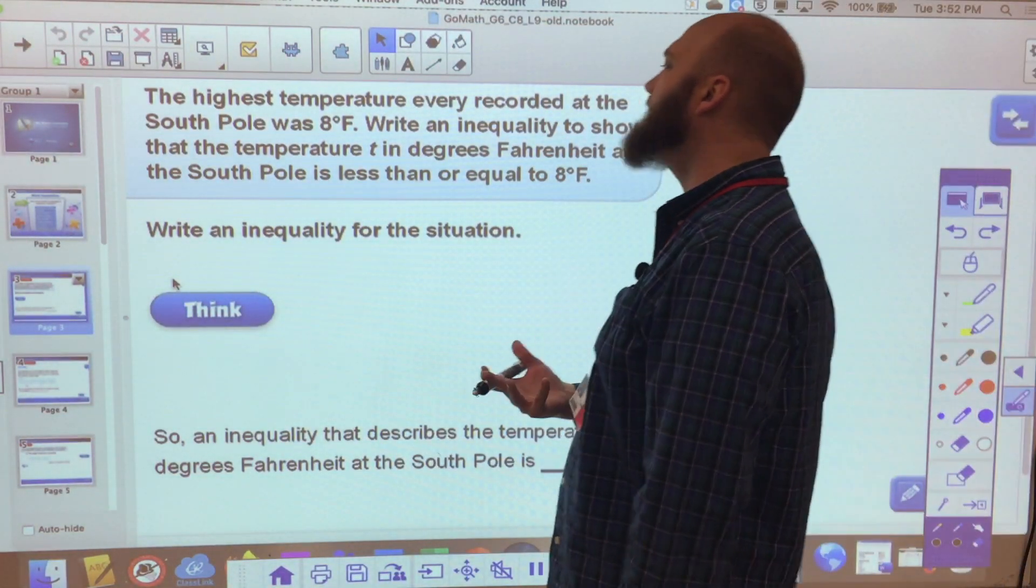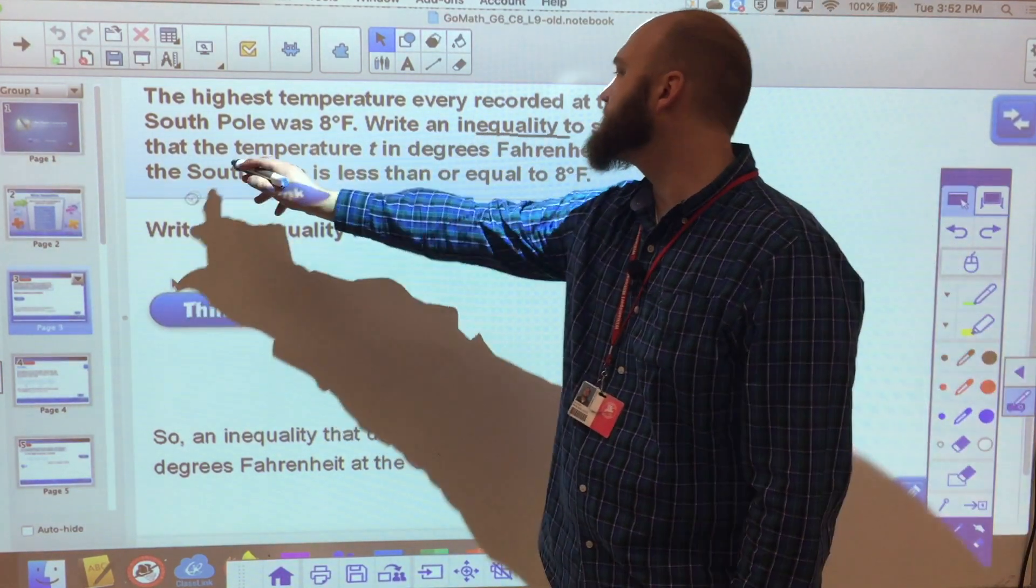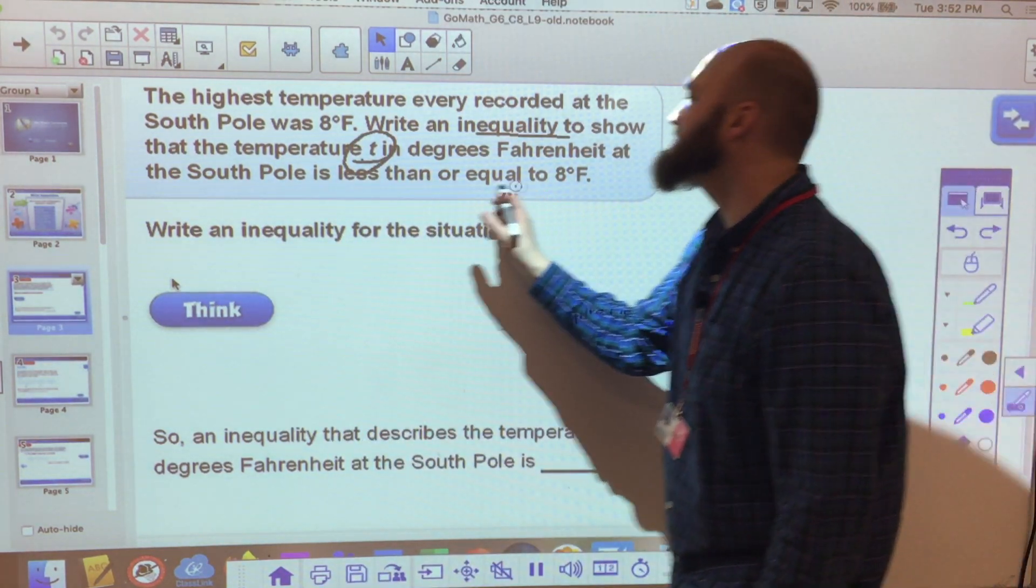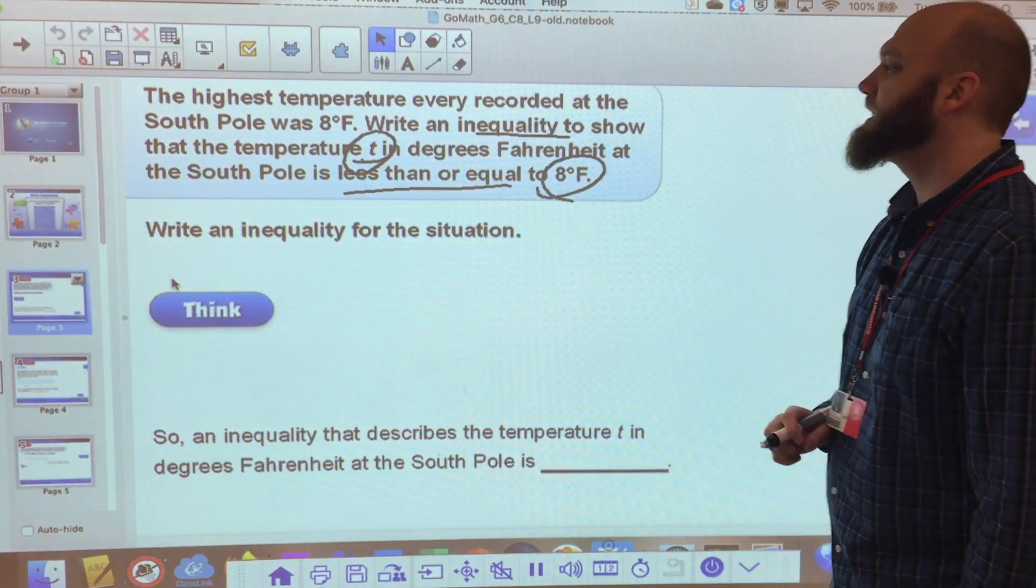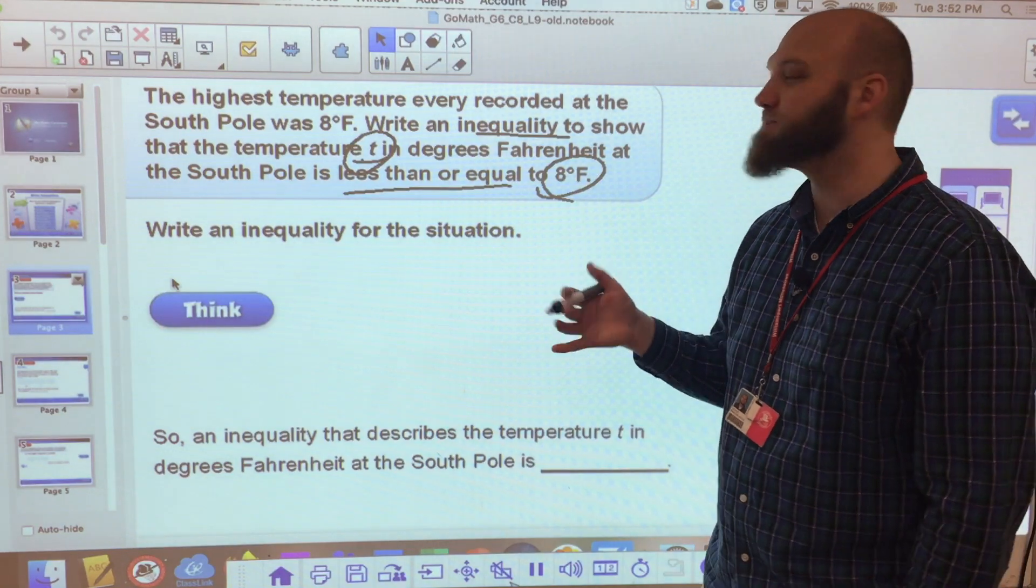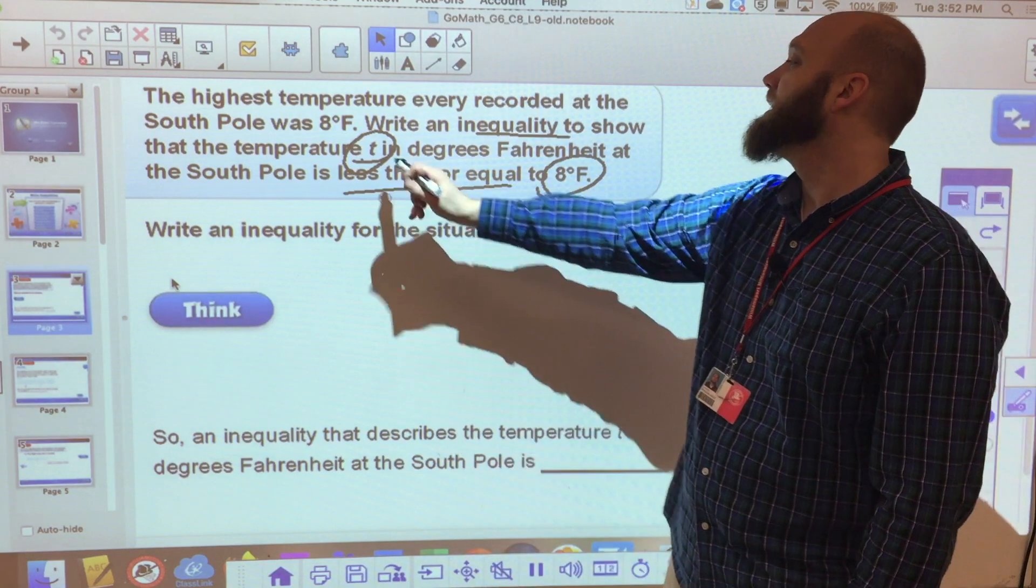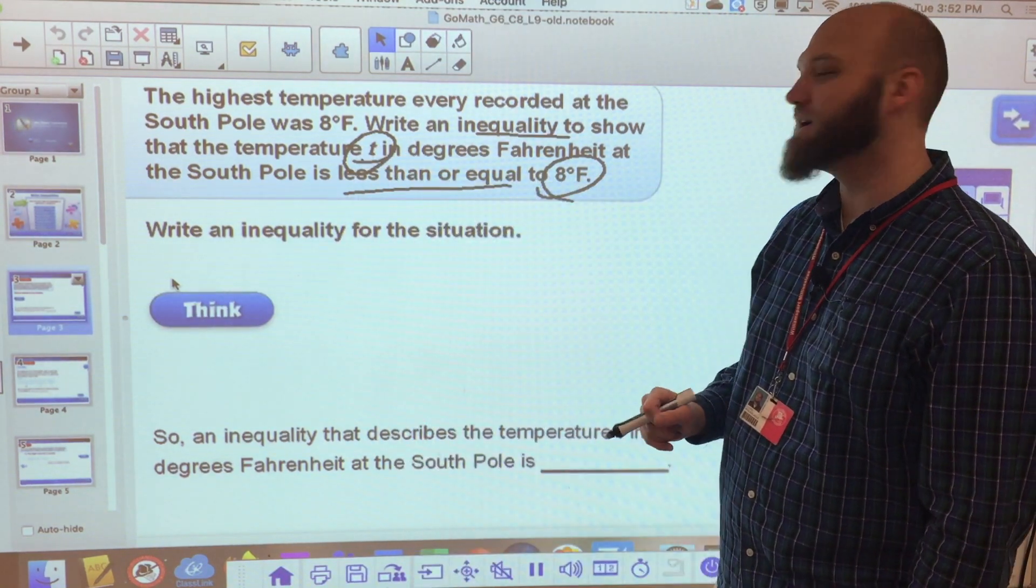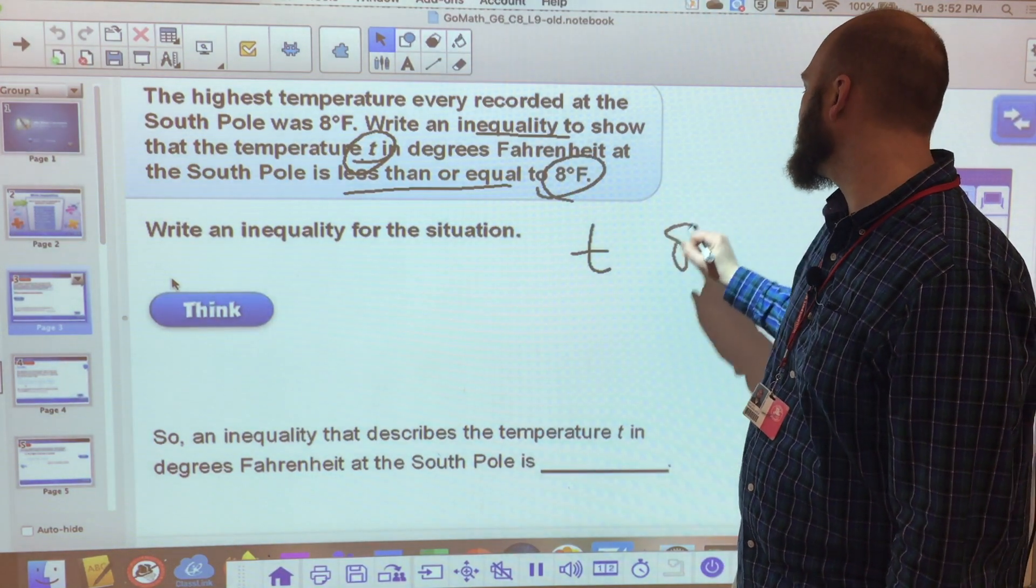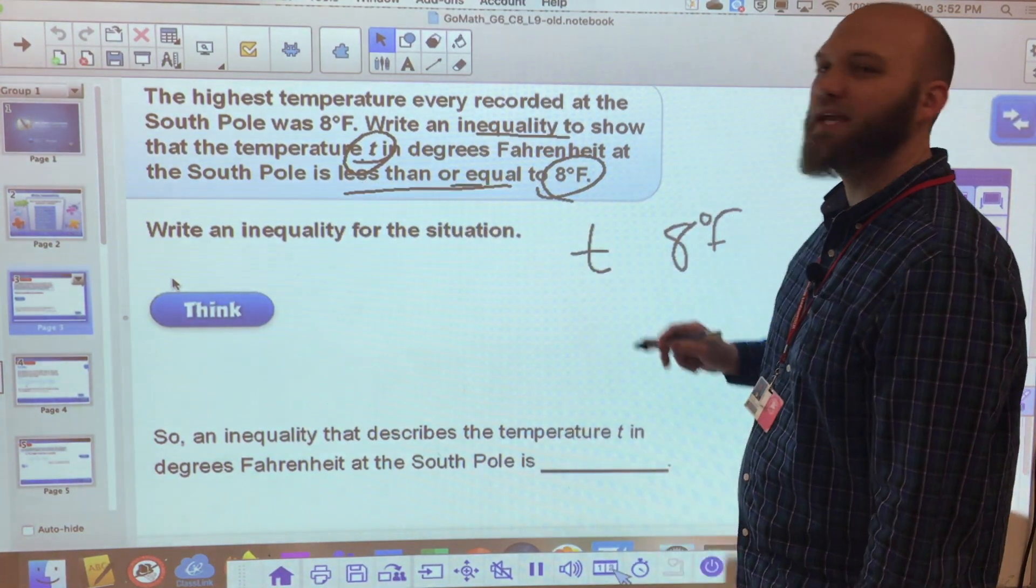The first one that we get is the highest temperature ever recorded at the South Pole was 8 degrees Fahrenheit. Write an inequality to show the temperature T in degrees Fahrenheit at the South Pole is less than or equal to 8 degrees Fahrenheit. Okay, so you'll notice as I went through, I circled and underlined what's important. I want an inequality, so there should not be an equal sign. I have temperature in T degrees, so I'm dealing with T. And I want 8 degrees Fahrenheit.